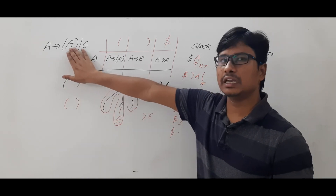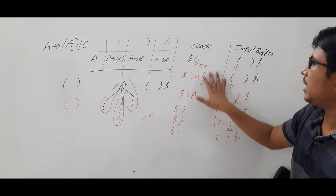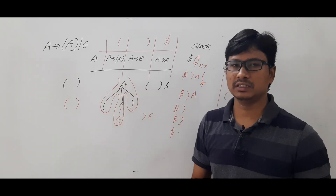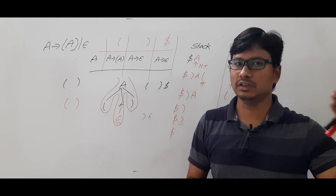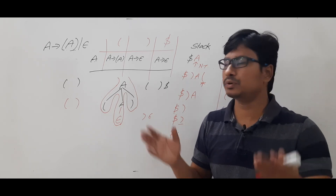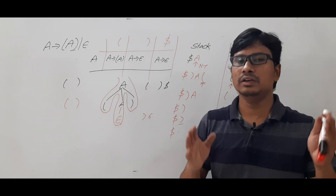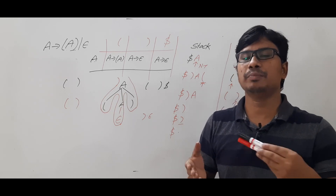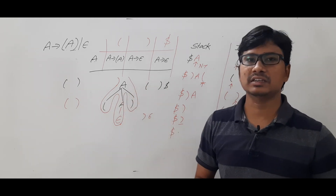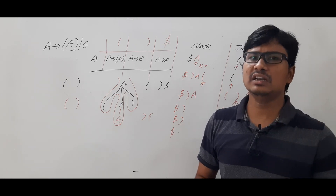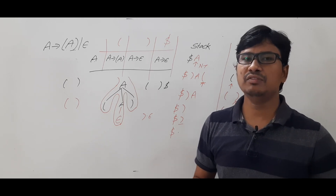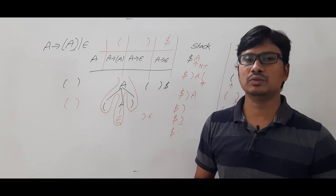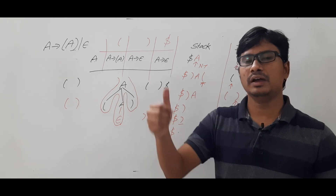For this given grammar, we constructed the LL1 parsing table, took a string derivable from the grammar, applied the LL1 parsing algorithm, and constructed the parsing tree. With these two examples — one from the last video and one from this video — I hope you understand how the LL1 parsing algorithm works. If you have any doubts, feel free to ask in the comments. I will try to clear your doubts in less than 24 hours. Thank you for watching, have a nice day.